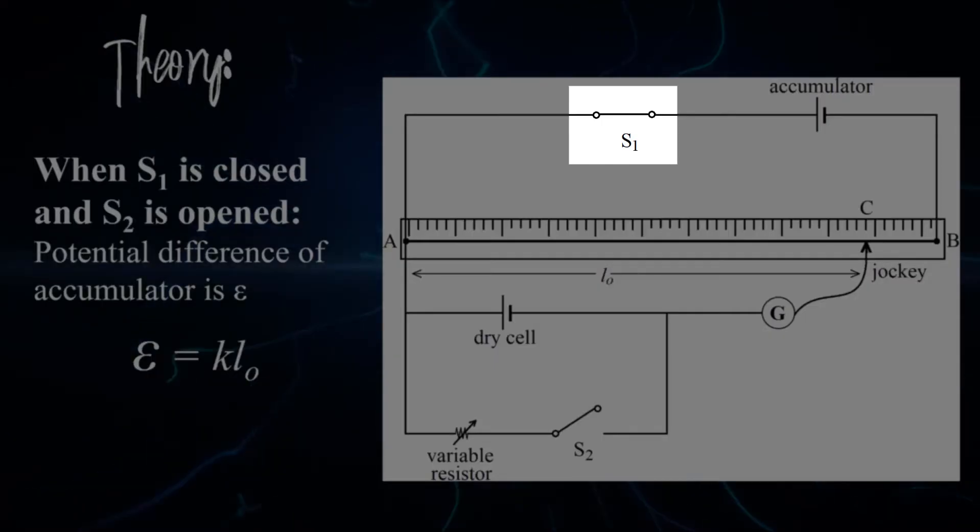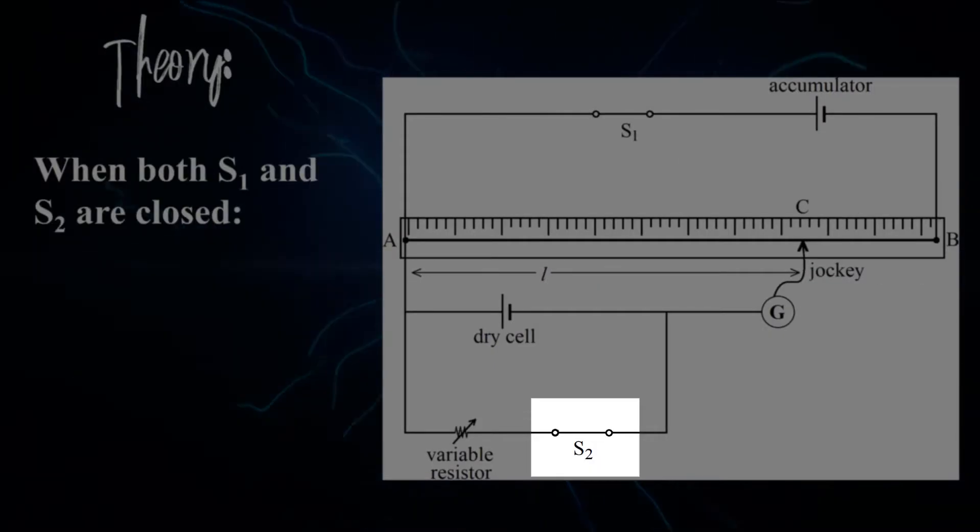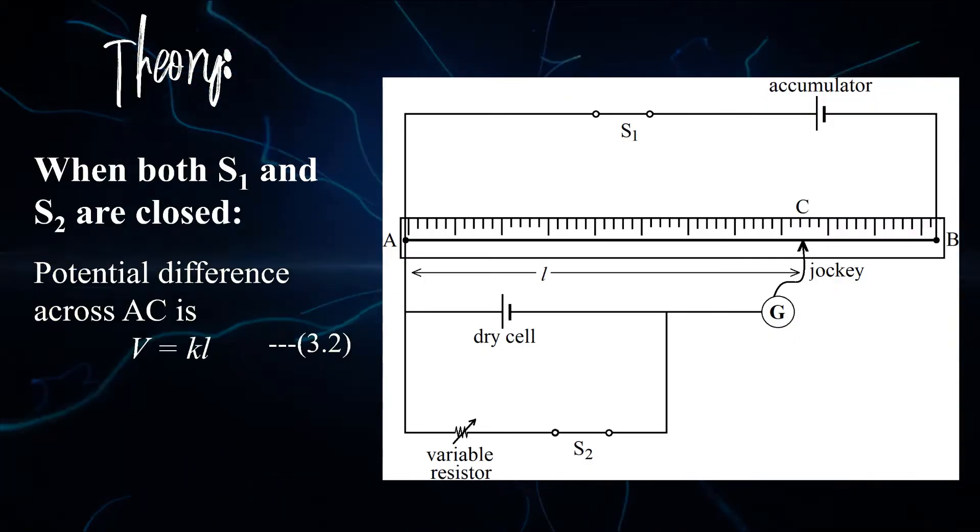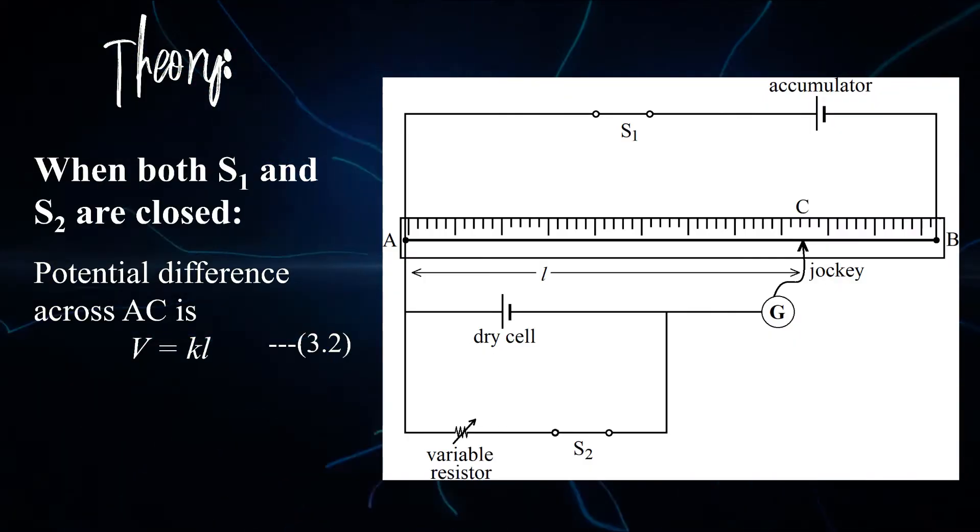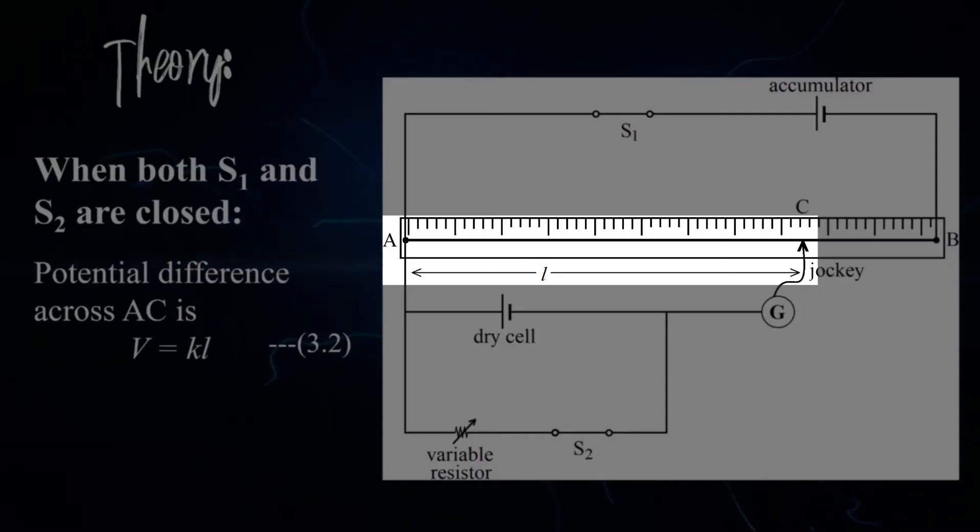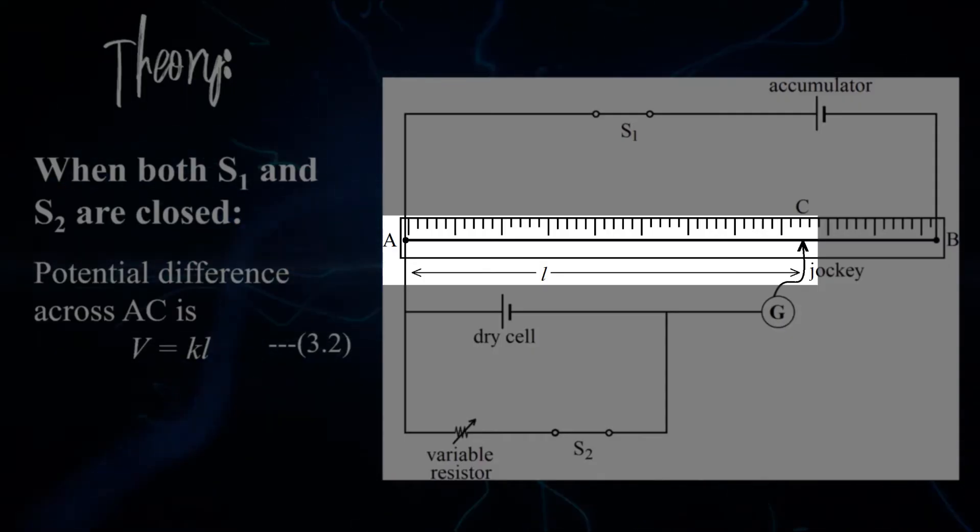But when both S1 and S2 are closed, the potential difference is V equals to KL. Notice that the length measured from A to C is now labeled as L.